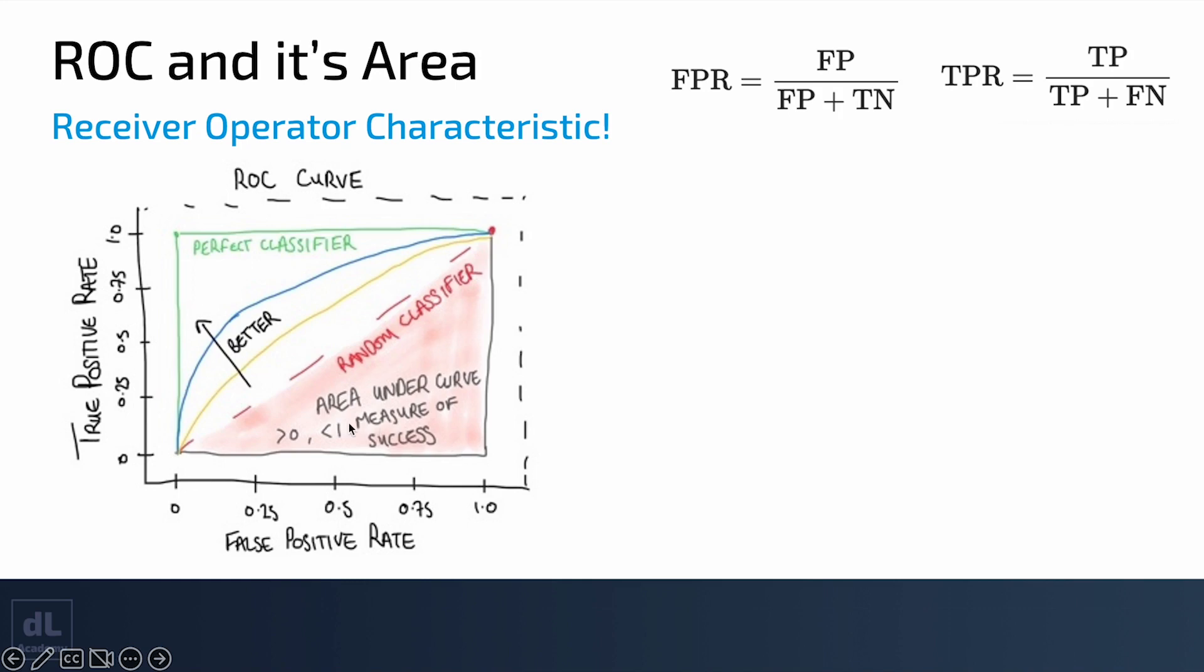The better and better they are, all the way to perfect, it becomes 1. So this gives a simple quantitative measure, this area under this curve, of the relative performance of two classifiers. You can see how two classifiers do against each other.